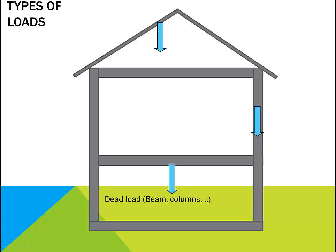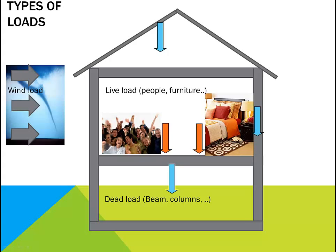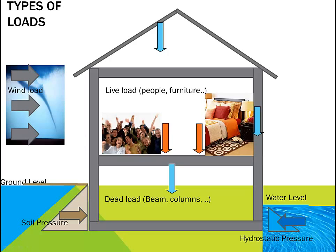Next one is live load due to people, furniture, and other moving loads that are due to the intended use of the structure. Next come the lateral loads due to wind, soil pressure below the surface of the ground, hydrostatic pressure if the house wall is exposed to static water, and snow load in snowy areas, and so on.